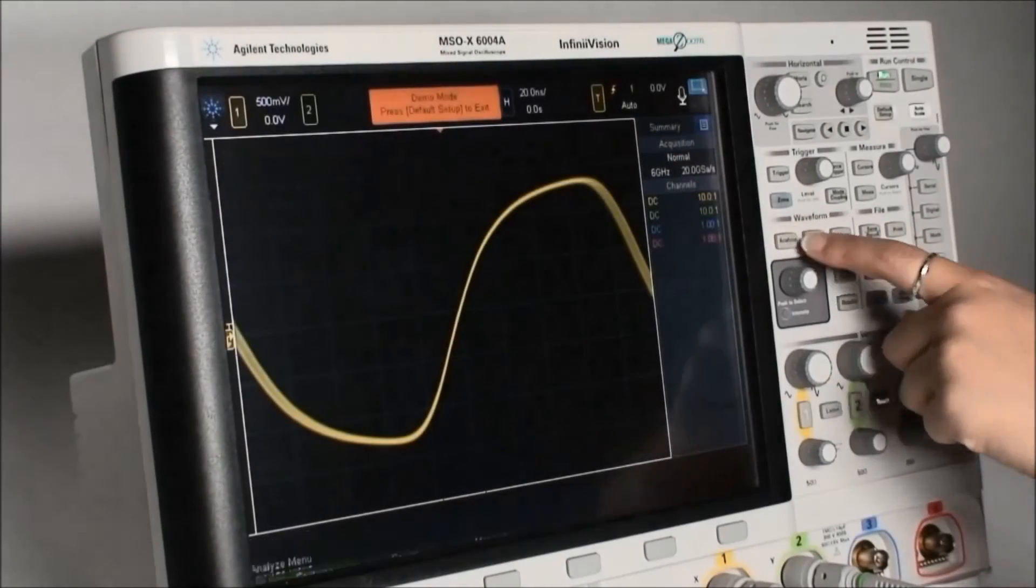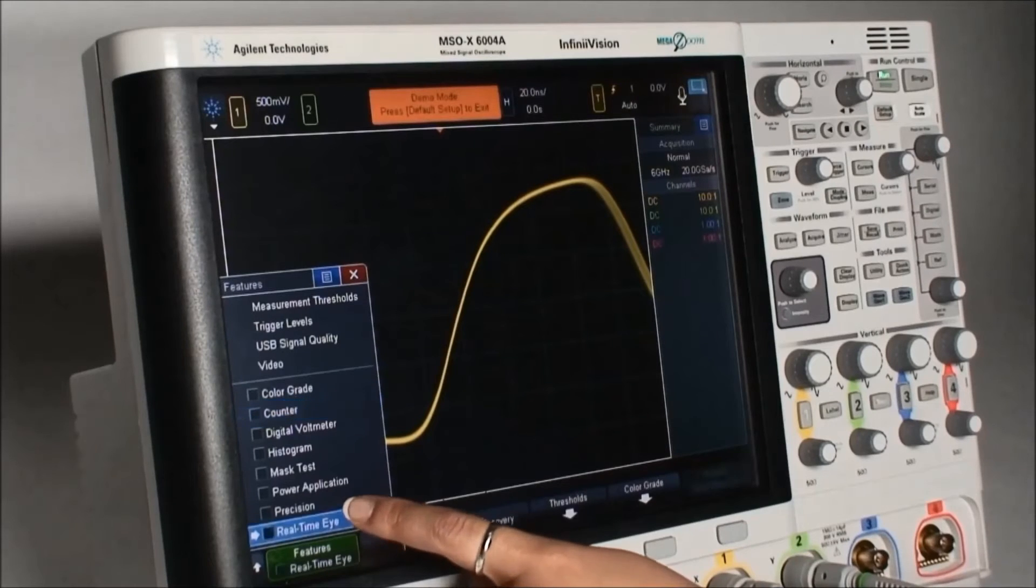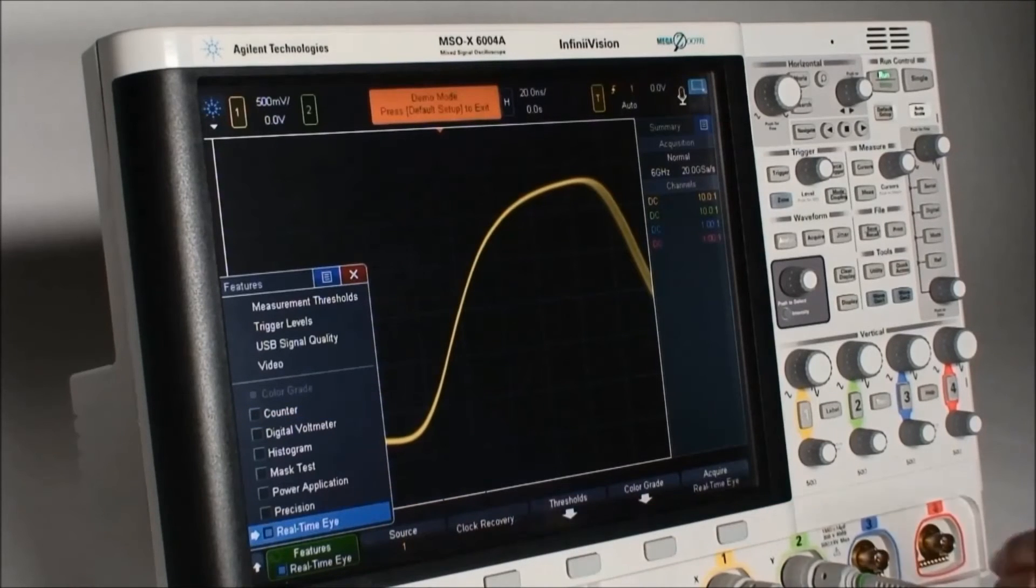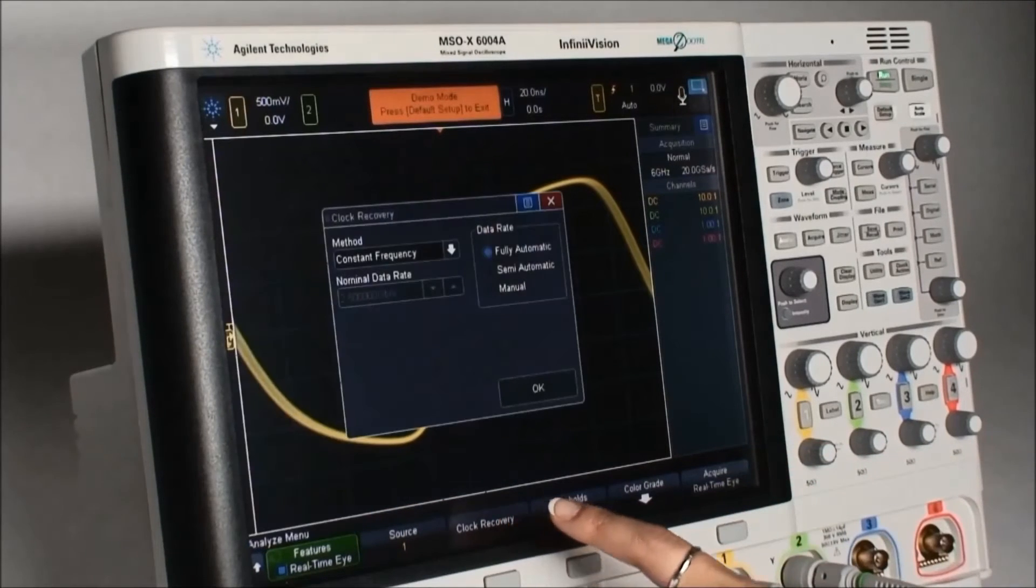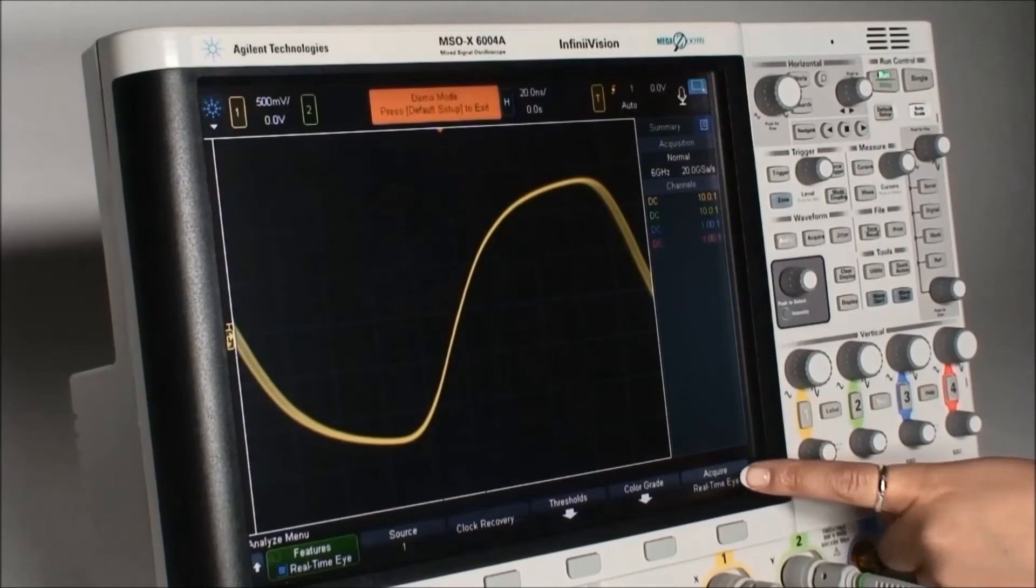Under the analyze menu, select features, select real-time eye, and we can make sure that the clock recovery is set to constant frequency. Now press acquire real-time eye.